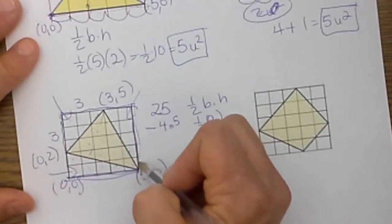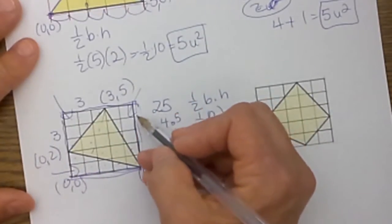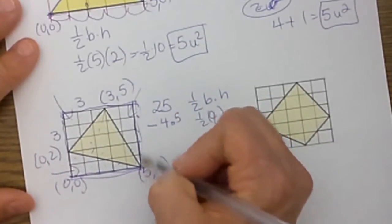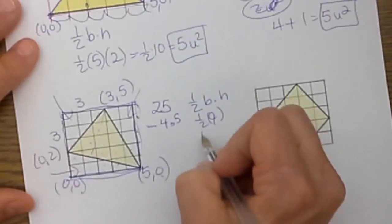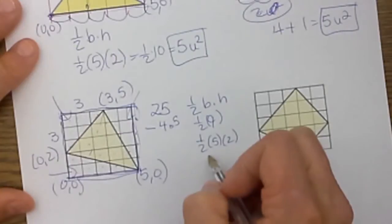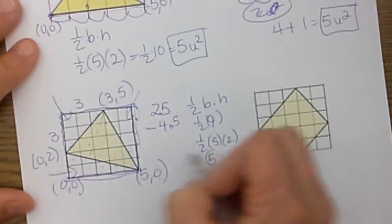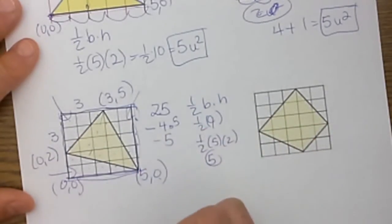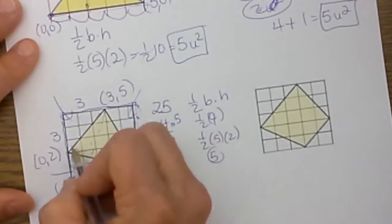Let's find the area of this triangle over here. This one is 1,2,3,4,5 high and 2 wide. So 1/2 of 5 times 2, that would give us 1/2 of 10, which is 5 square units. So we are going to subtract 5 more.